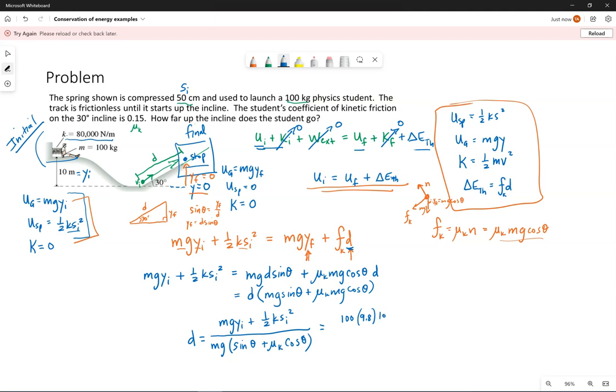So the mass of this student is 100 kilograms, g is 9.8, y initial is 10. That is a very strong spring. So one-half k s, remember we need everything in SI units, so the compression distance, that 50 centimeters, needs to be squared.